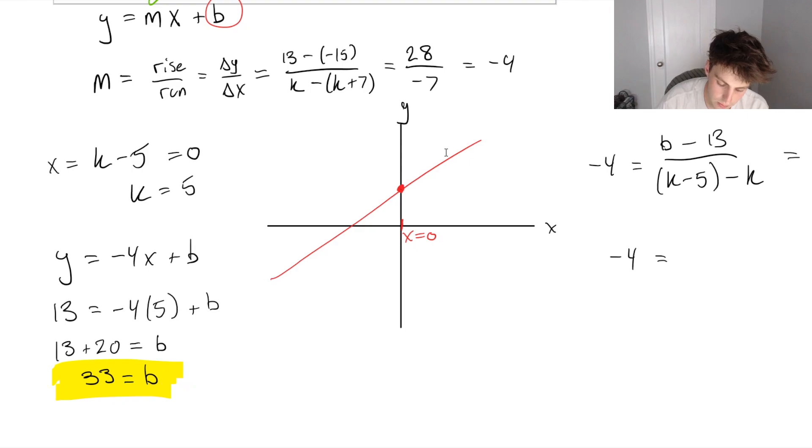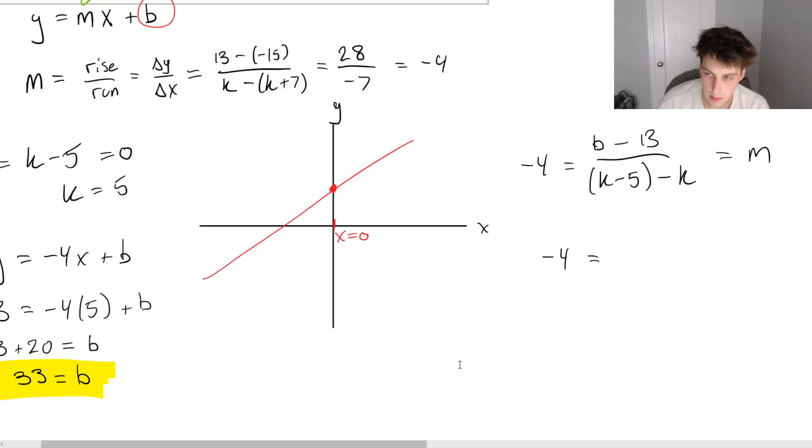So we've got now k's cancel out. We have b minus 13. And then we've got minus 5. And you'll see we end up with the same thing. 20 plus 13 is equal to b. b is equal to 33. Same result. Let's move to the next question.